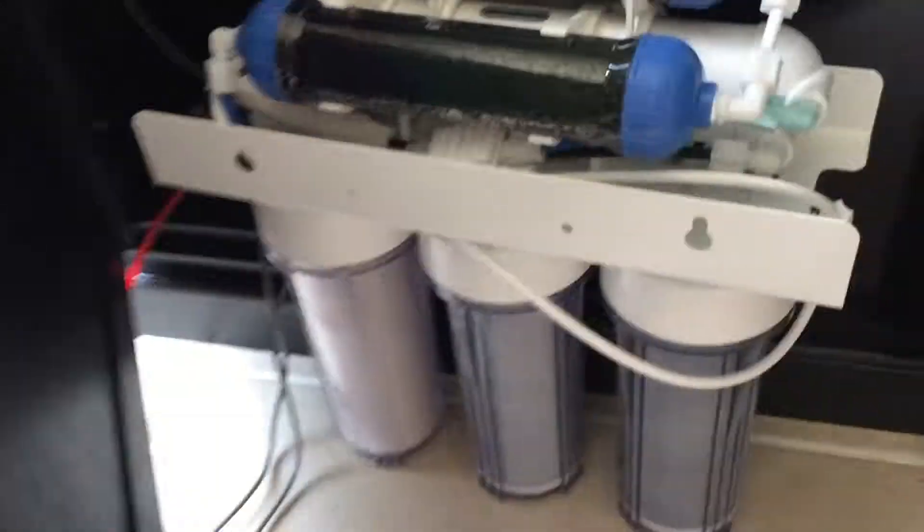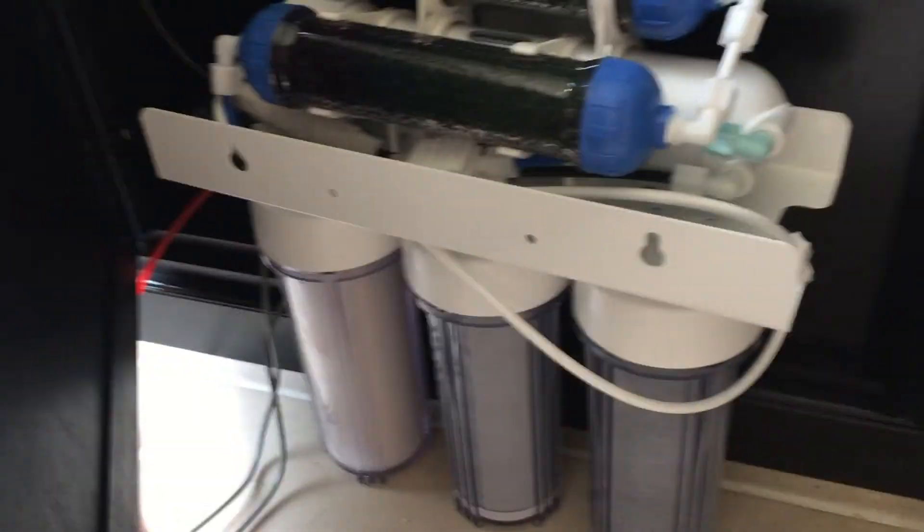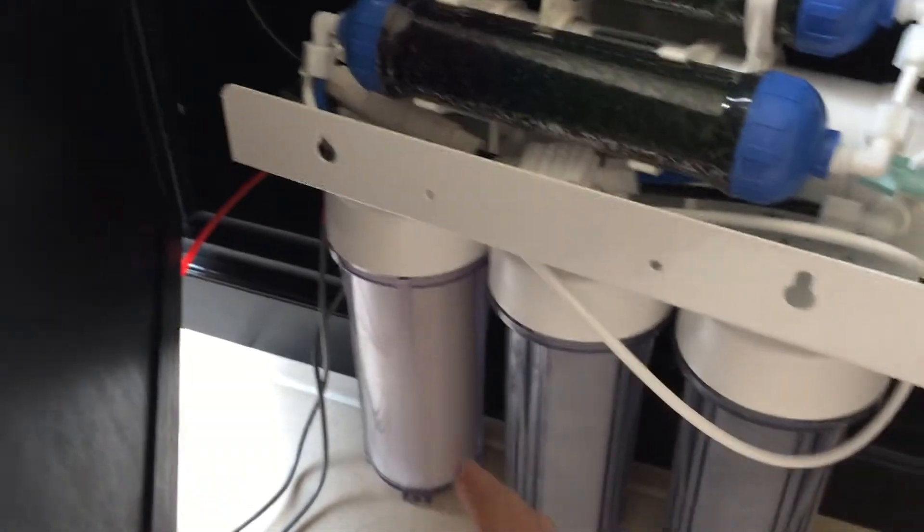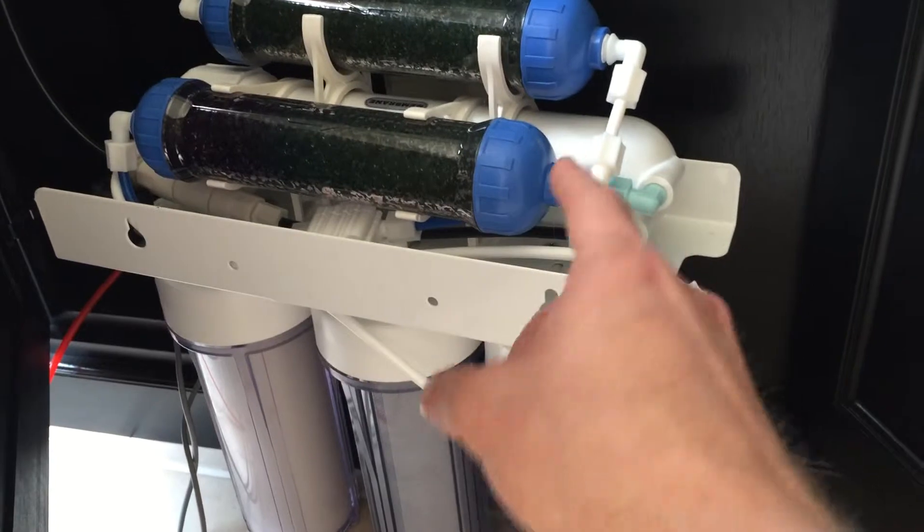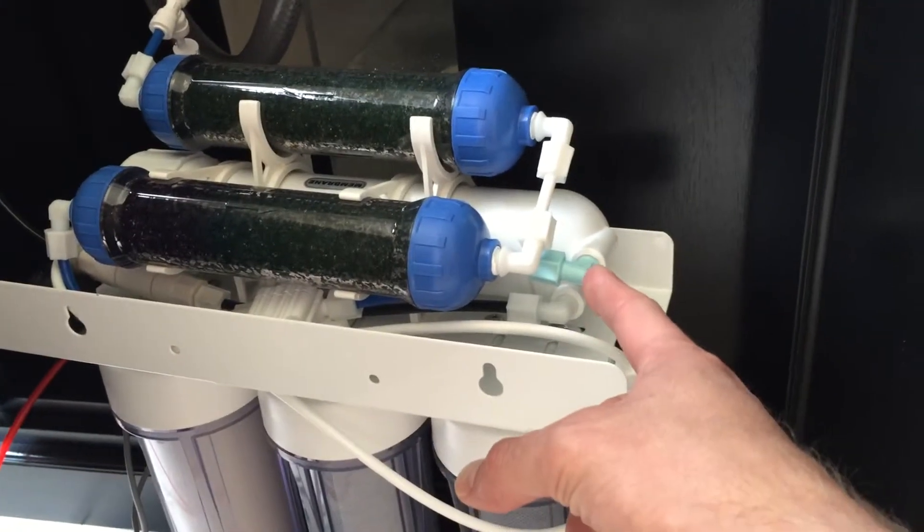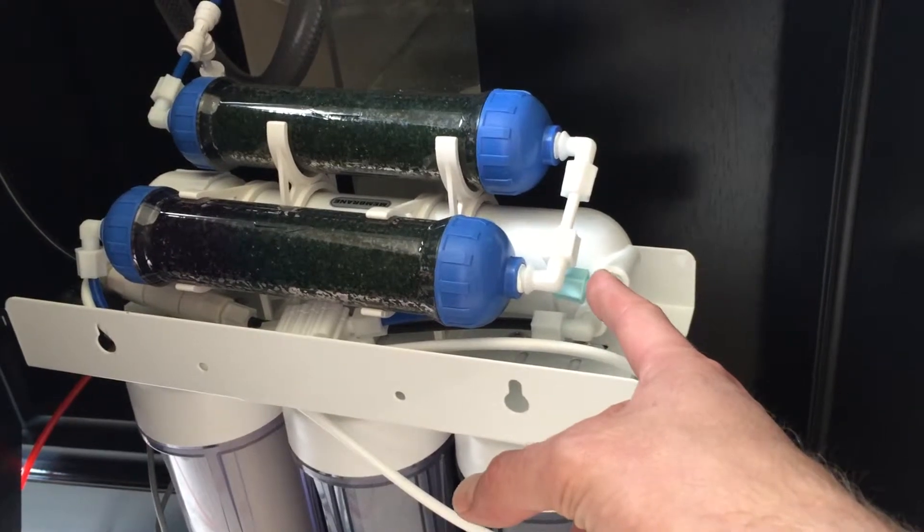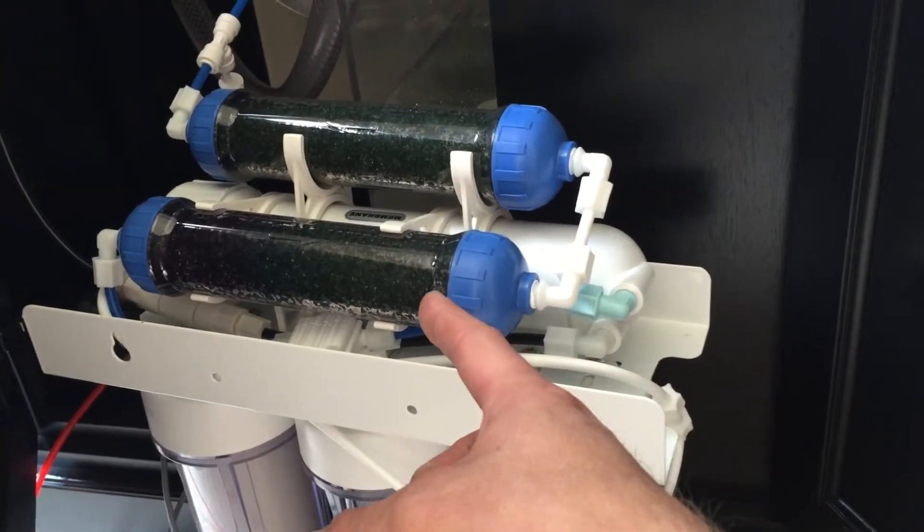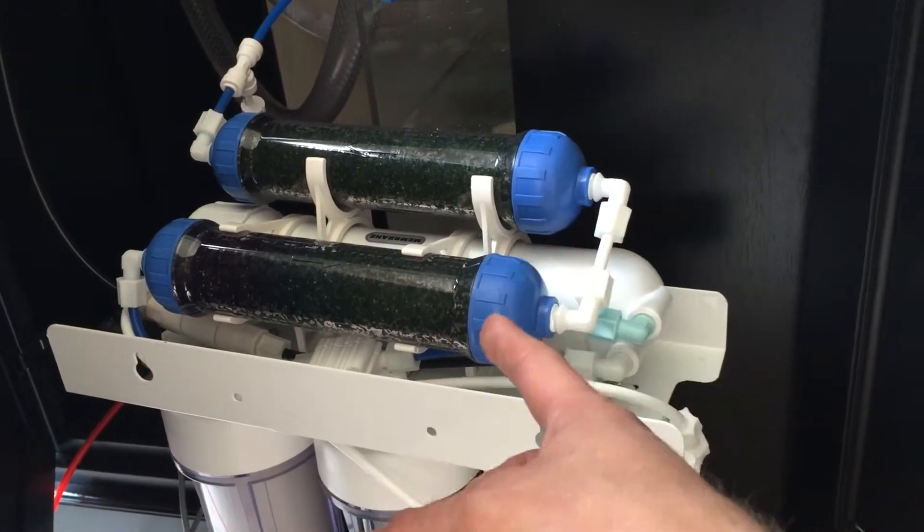I wanted to talk about RODI units. I've got a six-stage RODI unit. You can tell it's six stages because it's got a sediment filter, a couple of carbon filters, the RO membrane which rejects the water, and then it finally deionizes the water through these two resins.